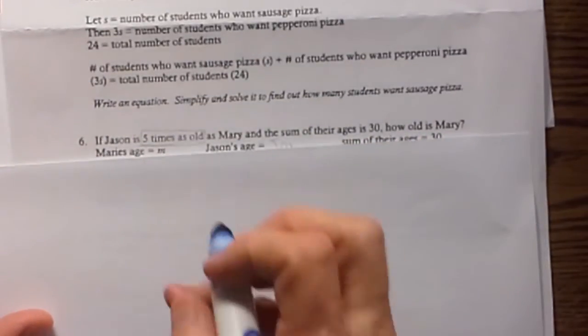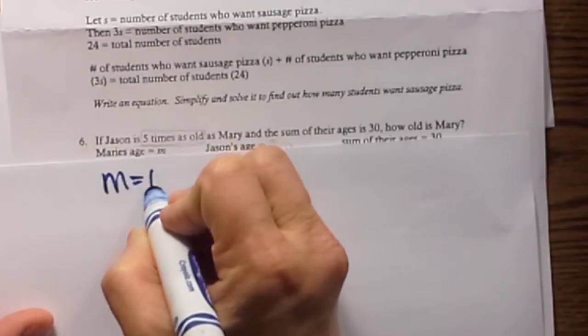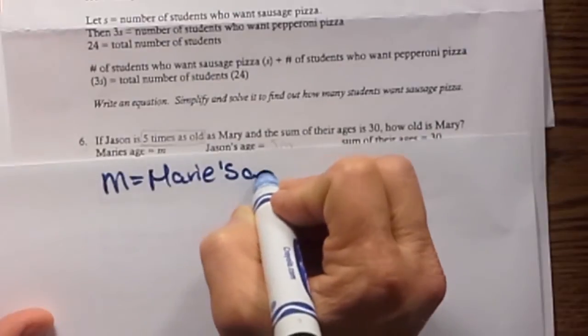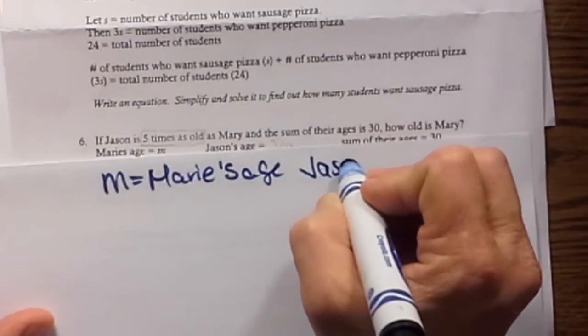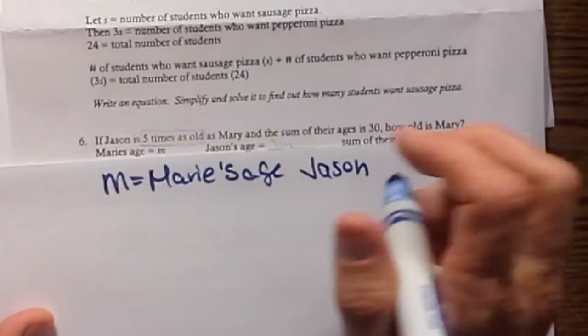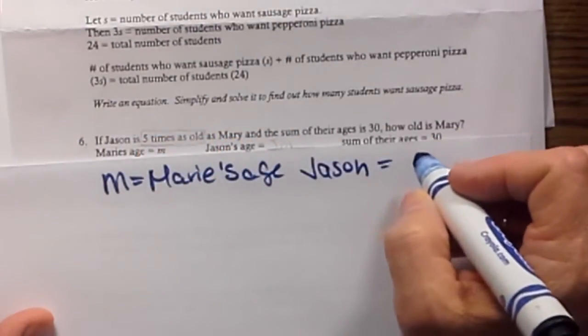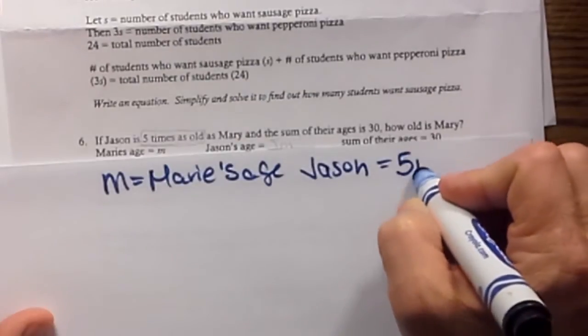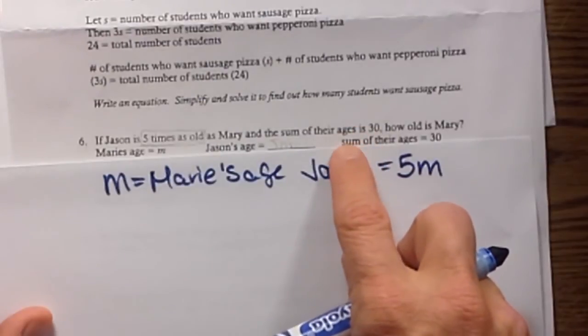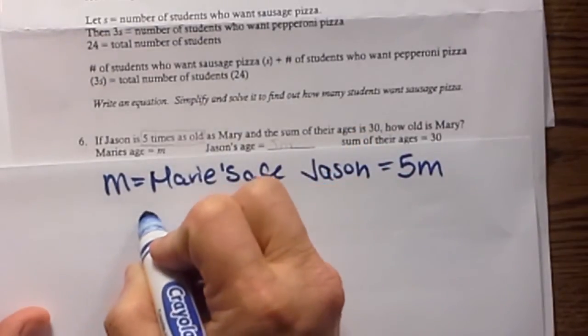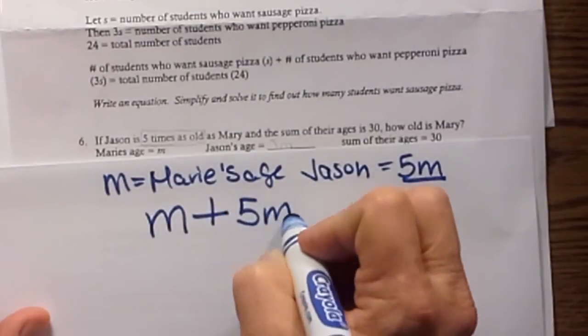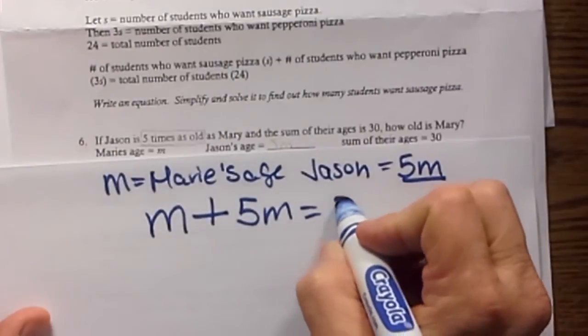Let's start off saying, Mary's age is equal to m. So Jason's age, we have to define that. Well Jason is 5 times as old as Mary. So 5 times m is his age. So 5m. And then together the sum, and sum in math means to add. So the sum of Mary's age and the sum of Jason's age, so the sum is equal to 30.